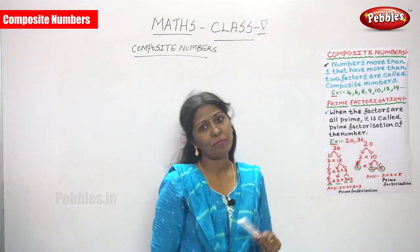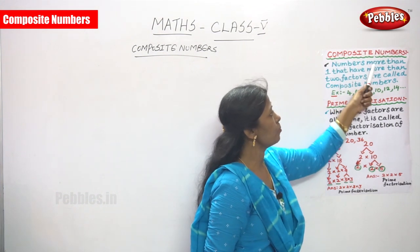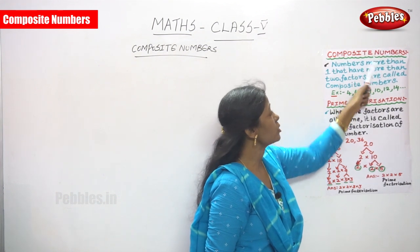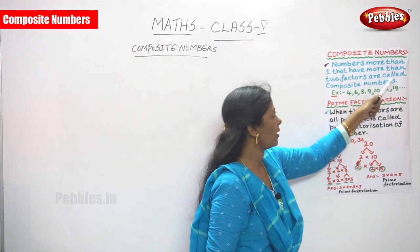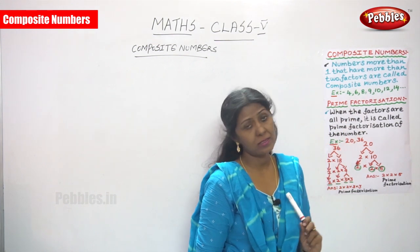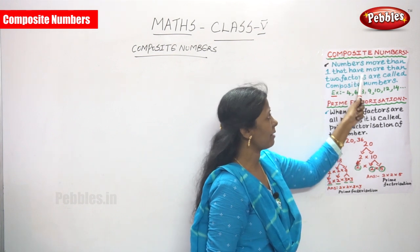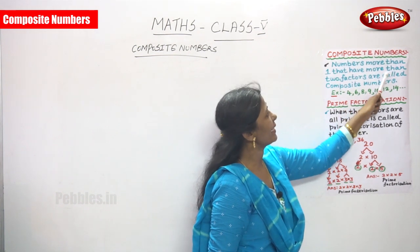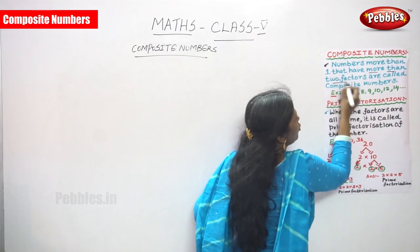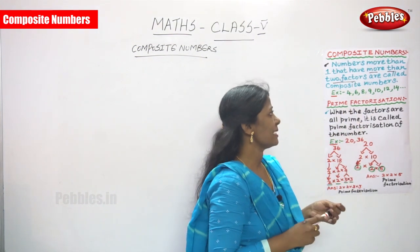Now we are going to see composite numbers. Numbers more than one that have more than two factors are called composite numbers. That is very important — more than two factors are called composite numbers.